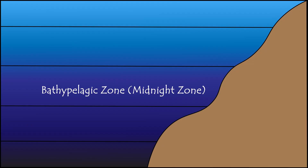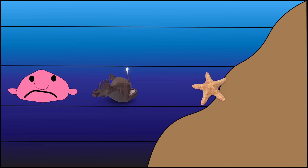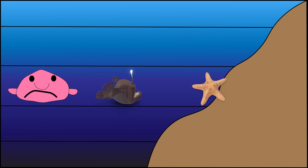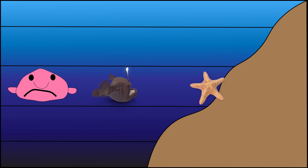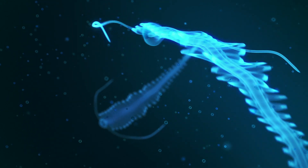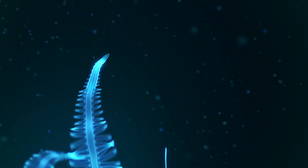The third layer of the ocean is called the bathypelagic zone, or the midnight zone. This zone lies between 1,000 meters and 4,000 meters, or 3,280 to 13,123 feet below the surface. It is completely dark and the pressure is very high. Creatures adapted to extreme conditions, such as bioluminescent organisms, are found here.